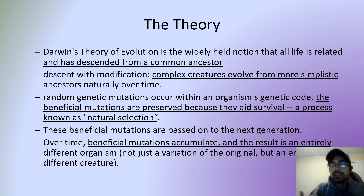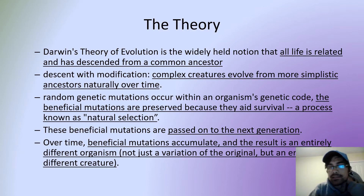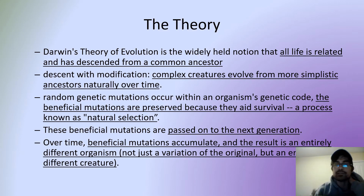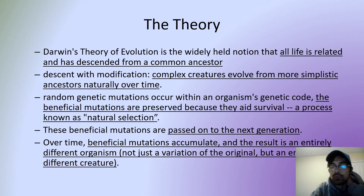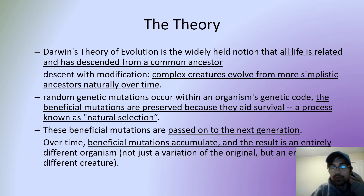The theory itself is essentially the widely held notion that all life is related in some shape or form and has descended from a common ancestor. Over time, as new generations of species are born, they have traits from the parents but sometimes with very minor modifications — starting with something more simplistic and eventually evolving into the more complex features we know today.